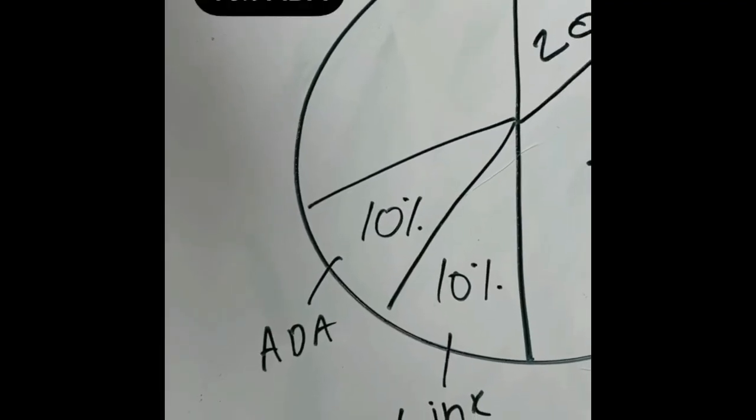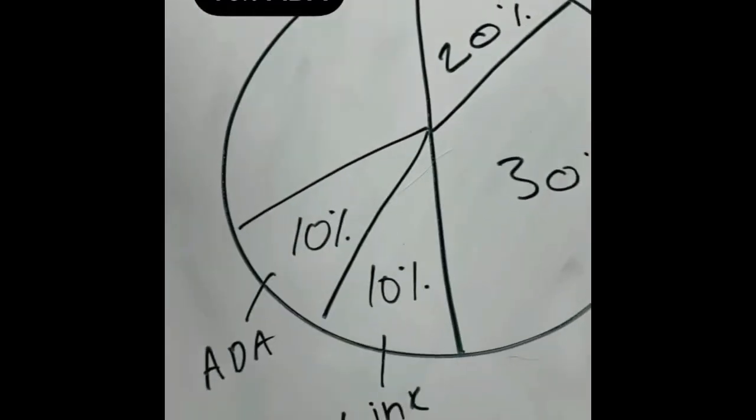Next, I would put 10% in ADA. ADA hopes to be like an Ethereum with lower transaction rates.